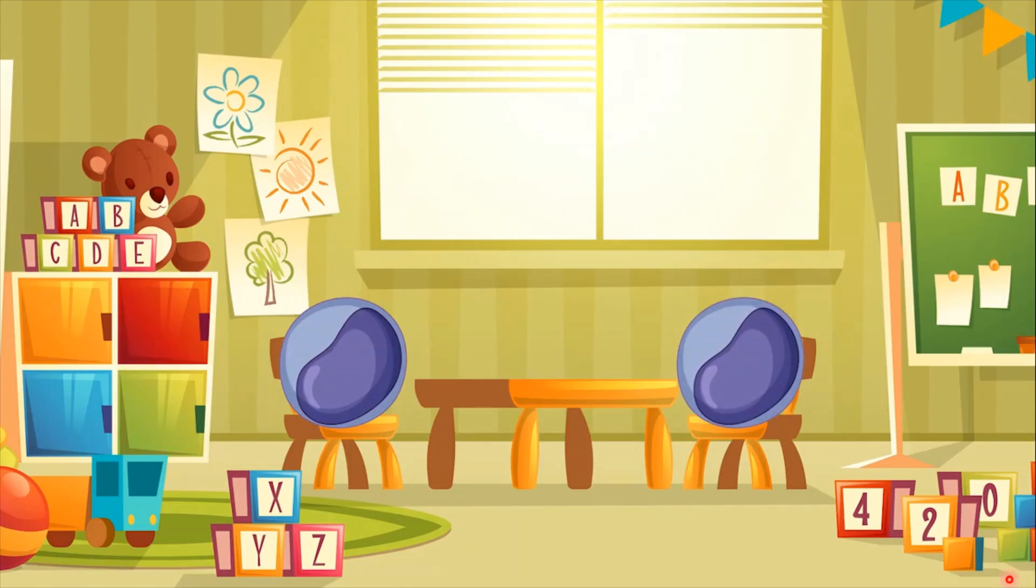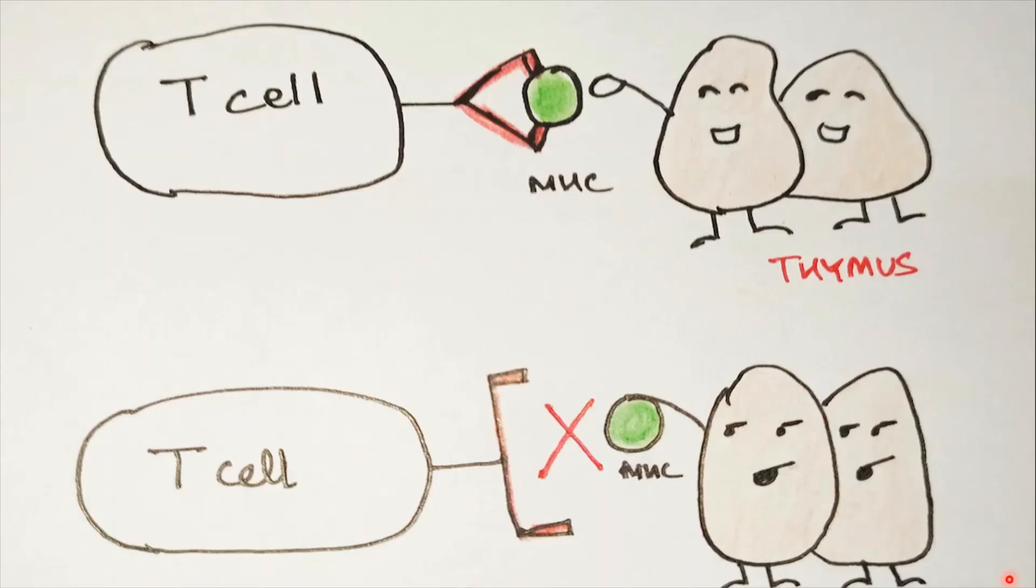When the immature T cells leave the bone marrow, they are said to be double negative, meaning they are neither CD4 positive nor CD8 positive. These cells in thymus are subject to different types of major histocompatibility complex proteins, that is the MHC class 1 and class 2 proteins.